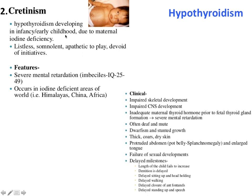The second form of hypothyroidism is cretinism. This is hypothyroidism developing in infants or early childhood due to maternal iodine deficiency — if the mother is suffering from iodine deficiency, the baby can also get the deficiency and develop cretinism. Severe mental retardation occurs, with IQ level only reaching 25 to 40. It occurs mainly in iodine-deficient areas like the Himalaya region, the Terai belt of Uttarakhand, China, and Africa. Symptoms include impaired skeletal development, impaired central nervous system development, and inadequate maternal thyroid hormone prior to fetal thyroid gland function.